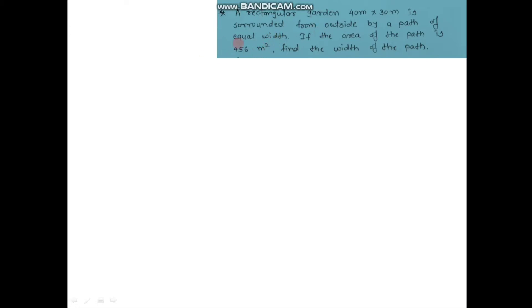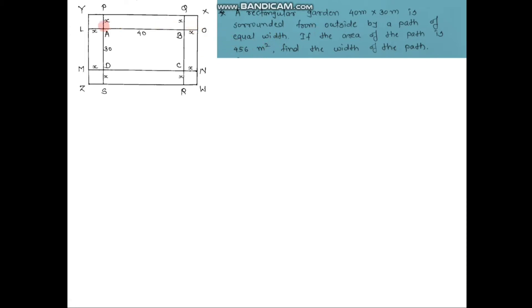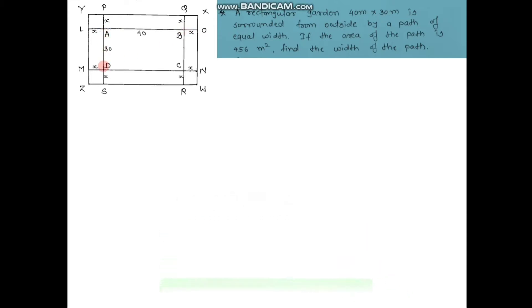To solve this problem we need a diagram. Consider quadrilateral ABCD as a rectangular garden whose dimensions are 40 meter and 30 meter. The length of this rectangular garden is 40 meter and the breadth is 30 meter. So AB = CD = 40 meter and AD = BC = 30 meter. Quadrilateral ABCD is a rectangle.